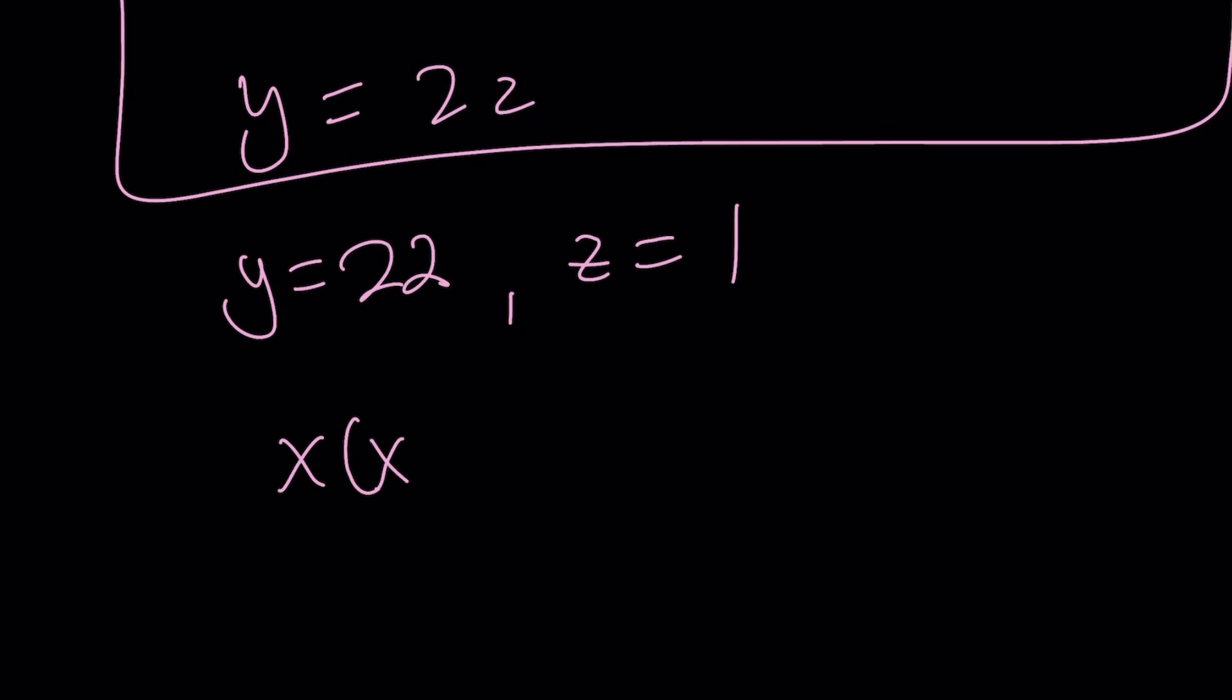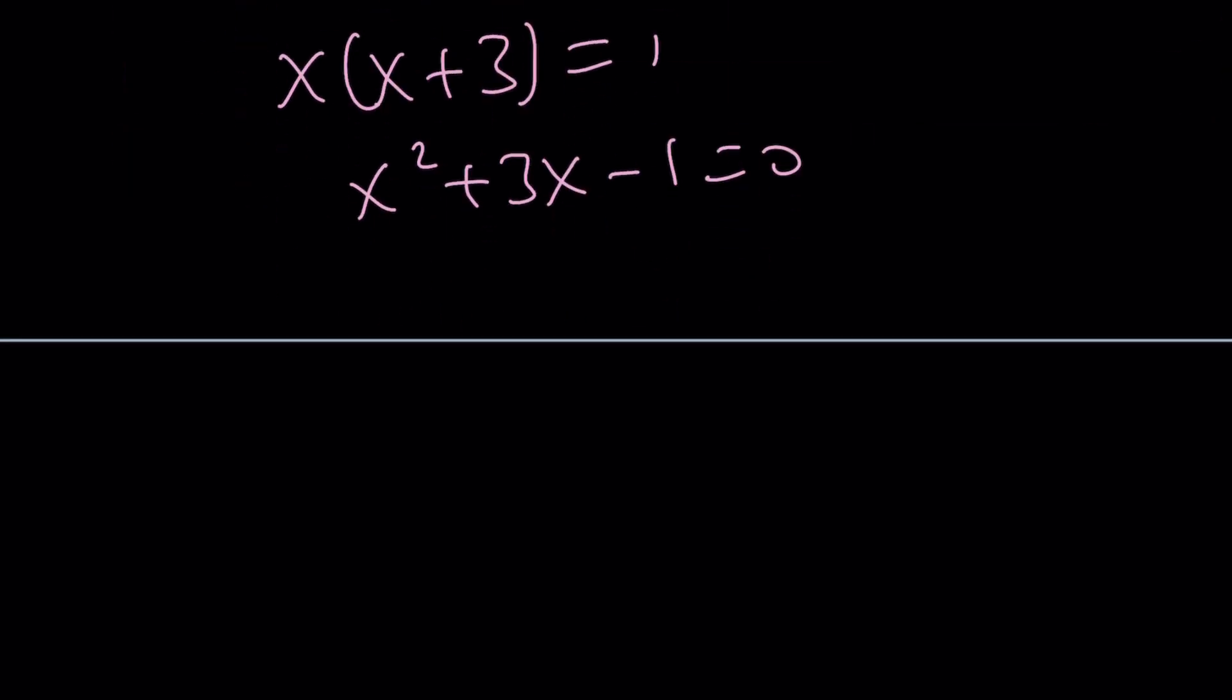And in this case, we get x times x plus 3 equals 1. x squared plus 3x minus 1 equals 0. And from here, we get x equals negative 3 plus minus the square root of b squared minus 4ac. And that's going to give you square root of 13. And that's going to be the end of this story.